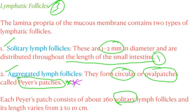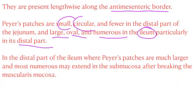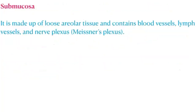Each Peyer's patch consists of 5 to 260 solitary lymph follicles, and its length varies from 2 to 10 cm. They are present lengthways along the antimesenteric border. Peyer's patches are small, circular, and fewer in the distal jejunum, whereas in the ileum they are large, oval, and numerous — particularly in its distal part. In the distal ileum, where Peyer's patches are much larger and most numerous, they may extend into the submucosa after breaking through the muscularis mucosa layer.